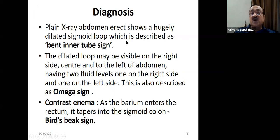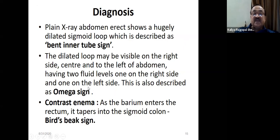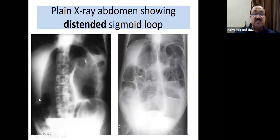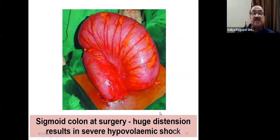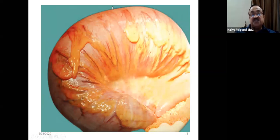Diagnosis is made with a plain X-ray. If patients are too sick to stand in the erect position, don't force them — they may collapse in the radiology department, especially those with hypertension. If the patient is reasonably stable, two signs are described: the omega sign with two fluid levels, and the bird's beak sign seen as barium enters the narrowed rectum. You can see enormously distended loops — classical of sigmoid volvulus.